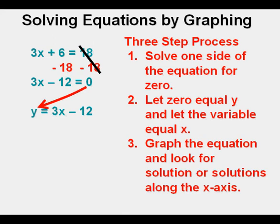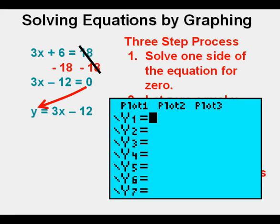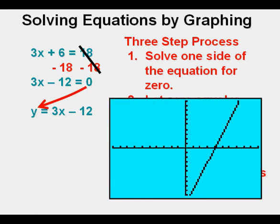Step three is to graph the equation and find the solution or solutions by seeing where it crosses the x-axis. We go to the y equals view in the TI-84 series calculator. Now we enter the equation, y equals 3x minus 12. Next we graph. We guarantee a standard window by pressing zoom 6.